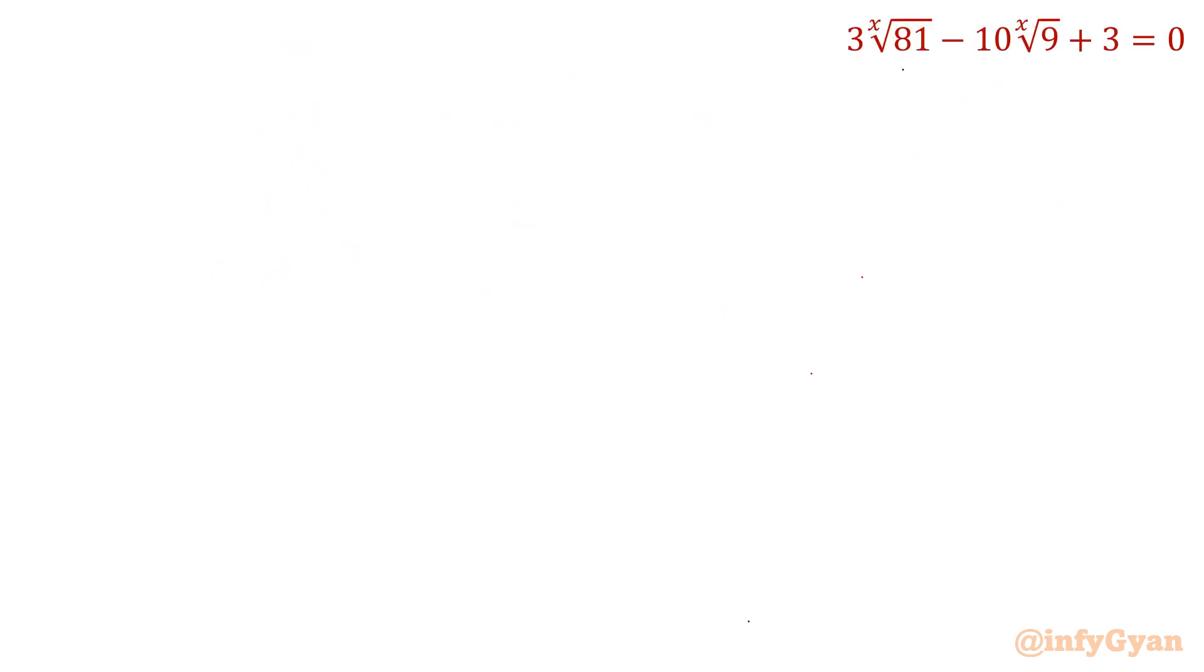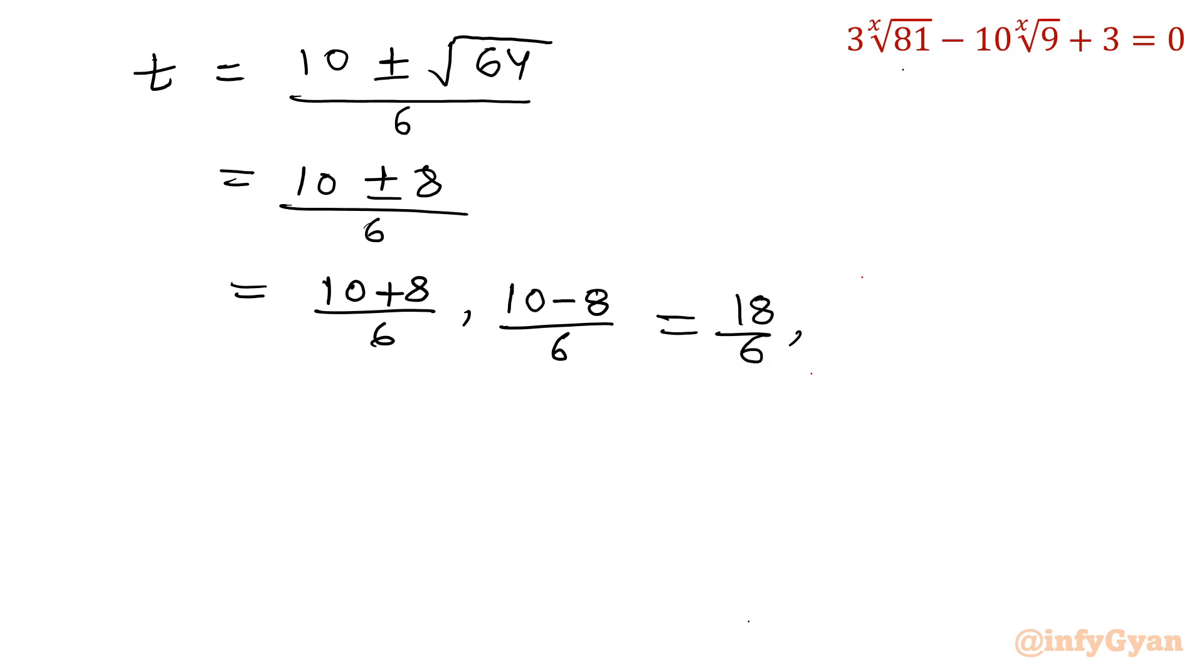So t equal to 10 plus minus 8 divided by 6. If I consider plus sign, 10 plus 8 by 6. If I consider minus sign, 10 minus 8 by 6. So I will have 18 over 6 and 2 over 6. In totality, I will have 3 and 1 over 3.